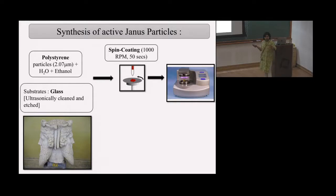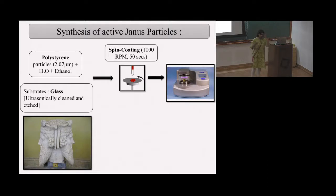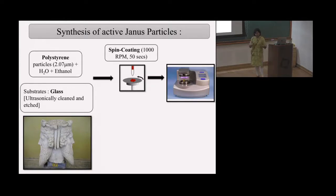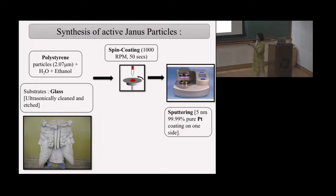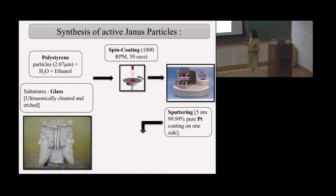Then we use a sputtering technique — a metal vapor deposition technique — where we use platinum to cover the exposed faces of the colloidal particles on our monolayers. As a result, one hemisphere of the colloidal particles is covered with platinum and the other face, not facing the vapor, is still polystyrene. This is called a masking technique, and the sputtering gives a five nanometer thickness platinum coating on one side of the polystyrene particles.